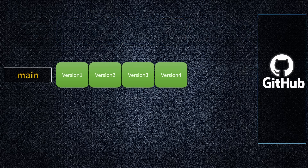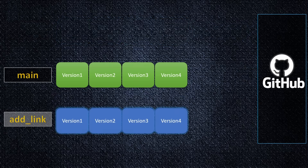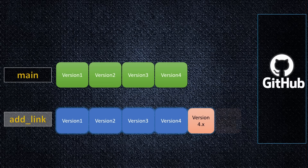Next, I create another branch called AddLink. It clones all the commits from the main branch. I'm still working locally — doing my changes, experimenting, adding my link, and creating two additional commits: version 4-something and version 5.